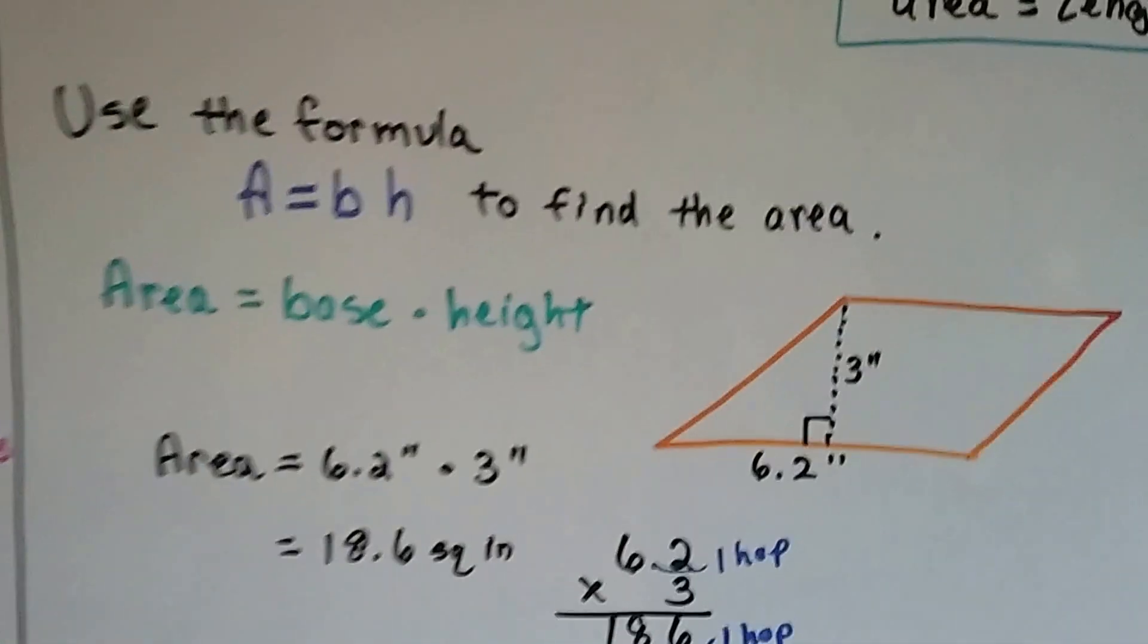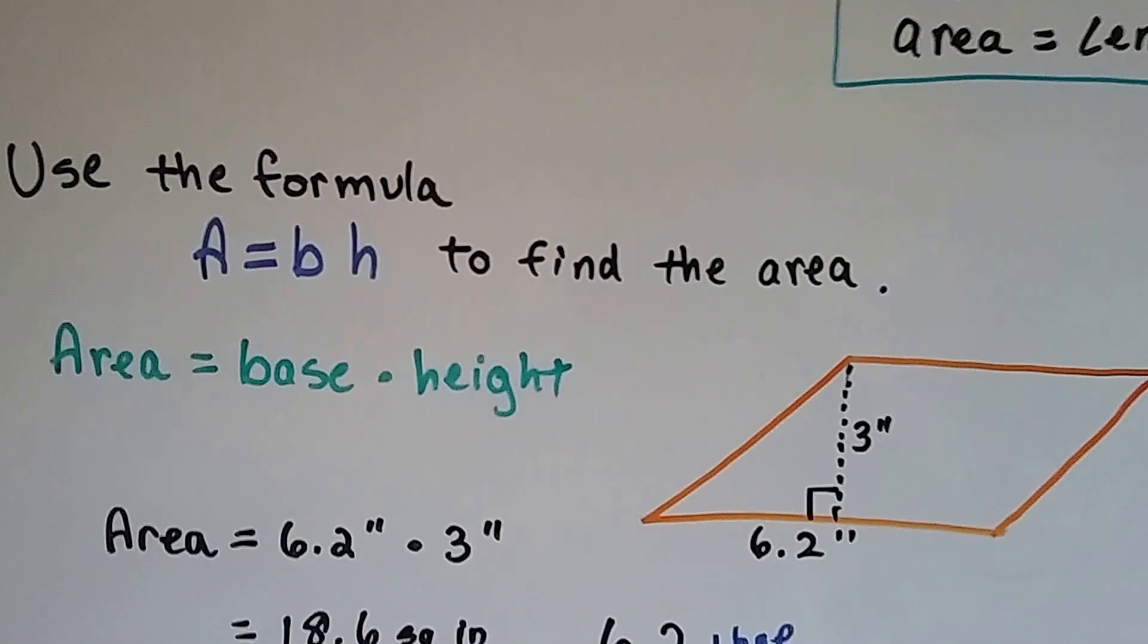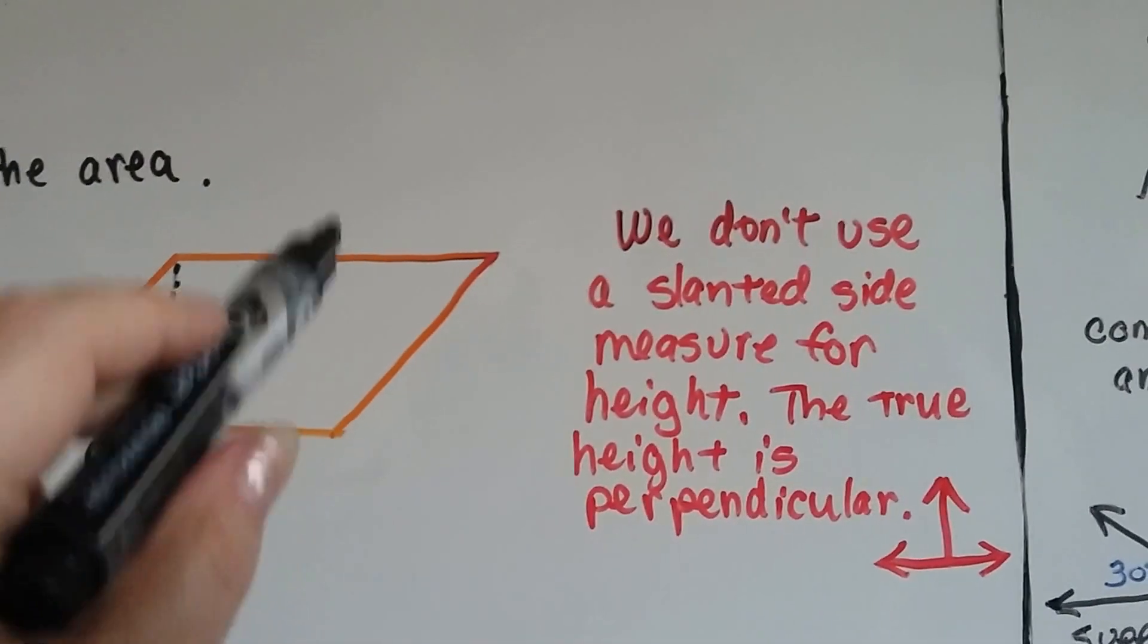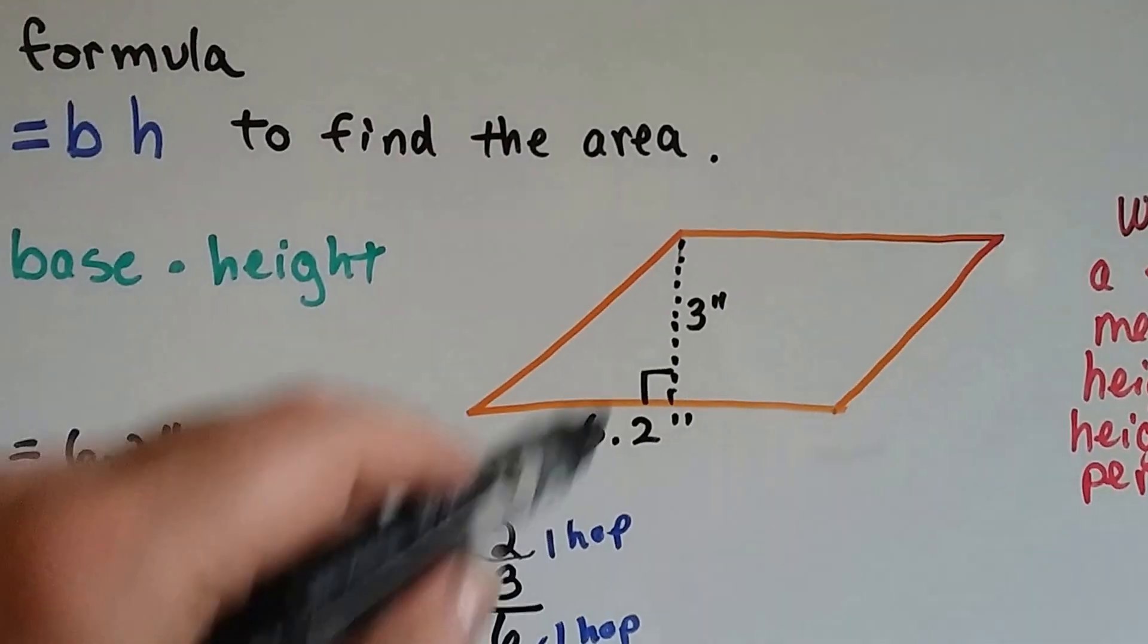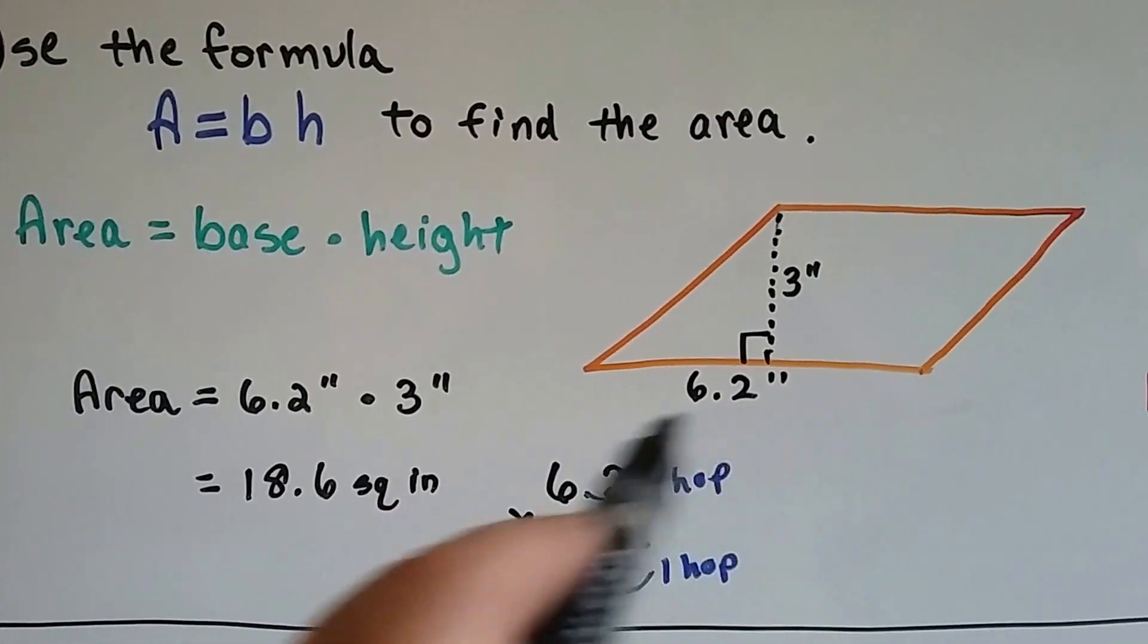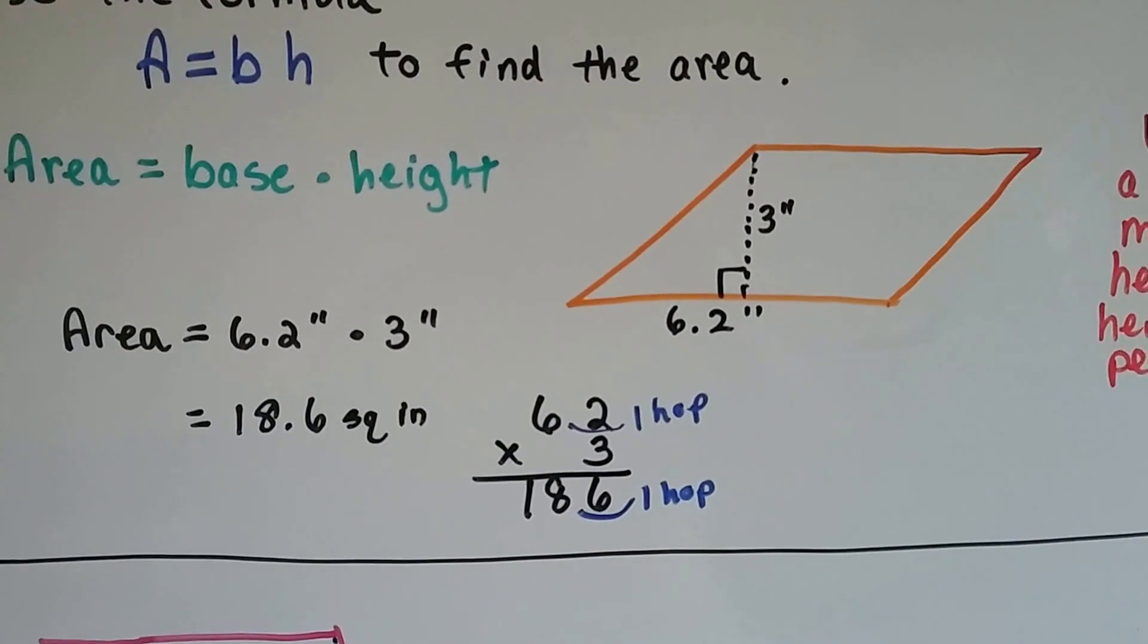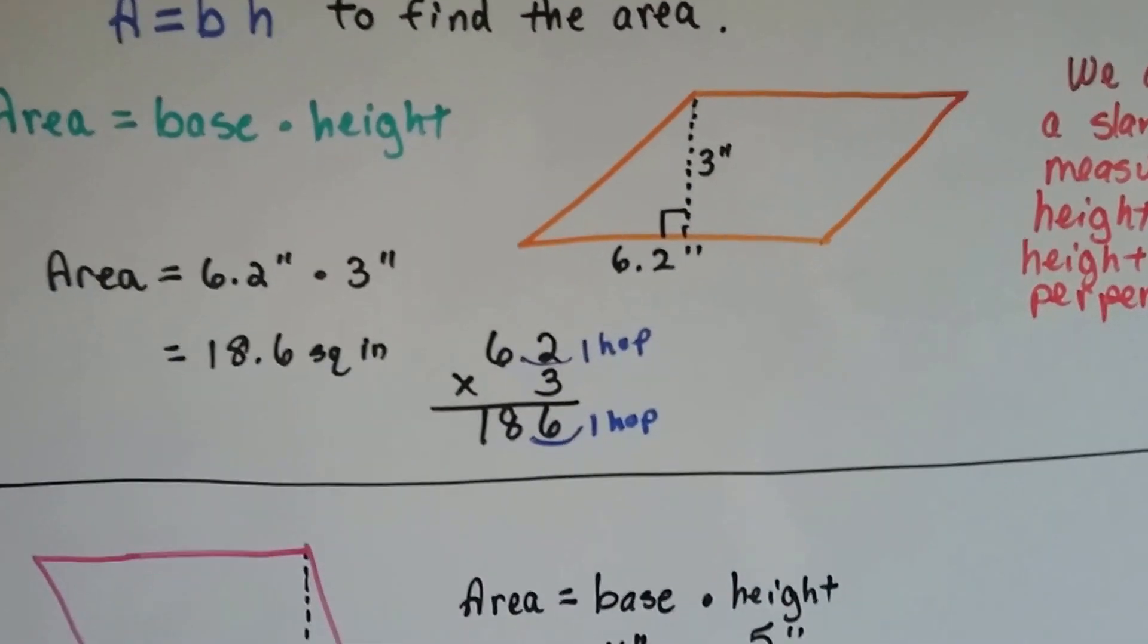If we wanted the exact amount, we could use the formula A equals BH to find the area. That means area is equal to the base times the height. We do not use a slanted height. The true height is perpendicular, going straight up and down with the 90-degree angle. So if our height is 3 inches and our base is 6.2 inches, we just multiply them together and get 18.6 square inches. Remember that when there's one hop in the equation, you have to put that one hop in the product.